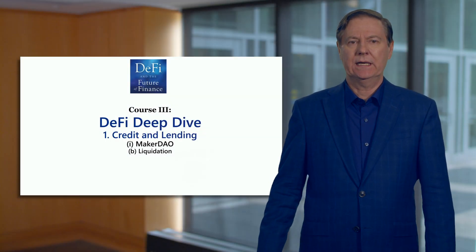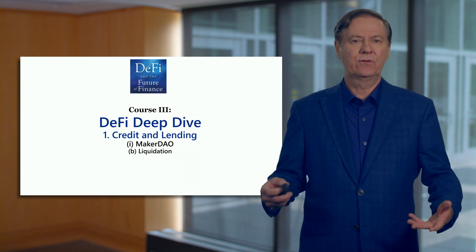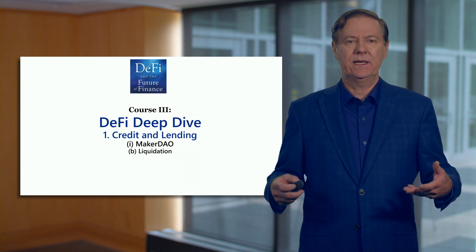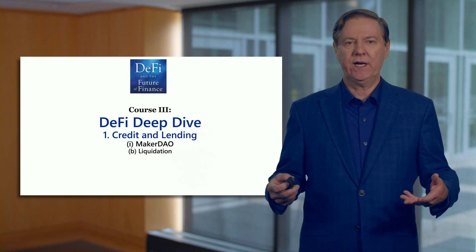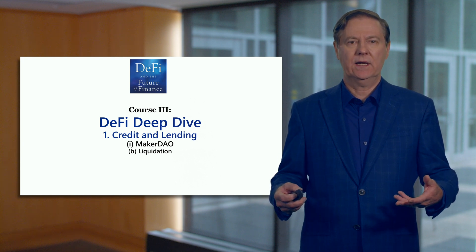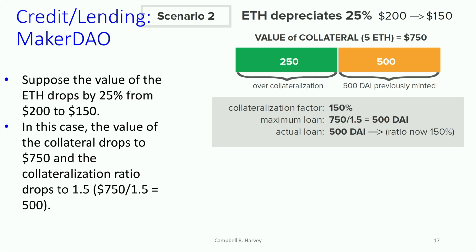Now let's talk about a different situation: a liquidation scenario. We've just been through an example where ETH appreciated in value. Now let's look at a different scenario where ETH depreciates by 25%, going from $200 to $150. Let's go through the mechanics of what would happen at that $150 value.